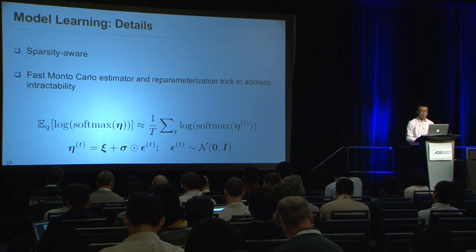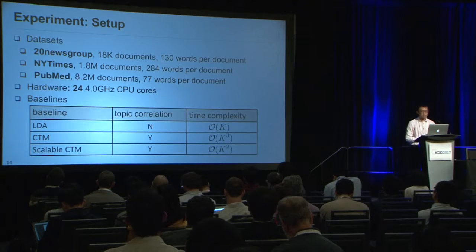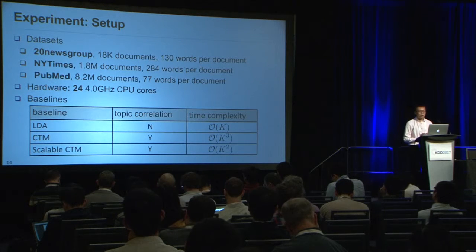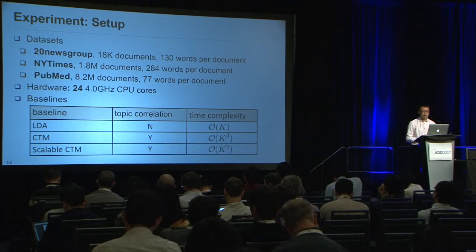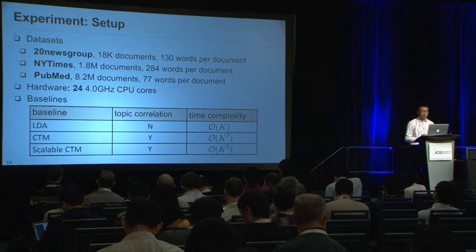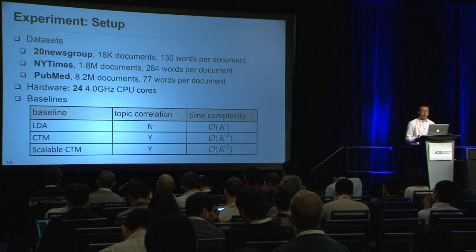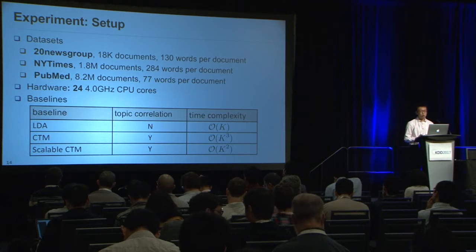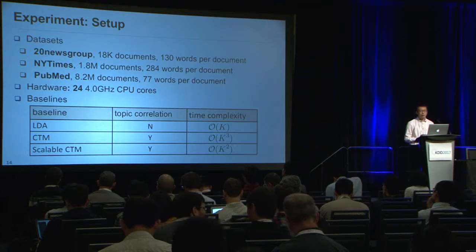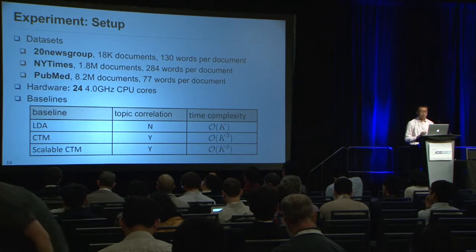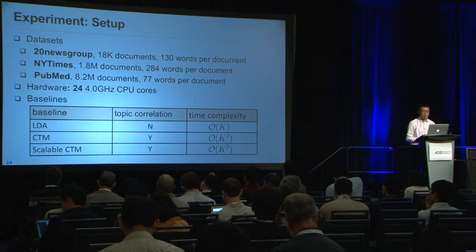I will now move to the experimental part. In the experiments, we evaluate our model on three different datasets varying from 18,000 to 8.2 million documents. All experiments are run with 24 CPU cores, and we compare our approach to LDA, CTM, and scalable CTM, which was the fastest correlated method before.